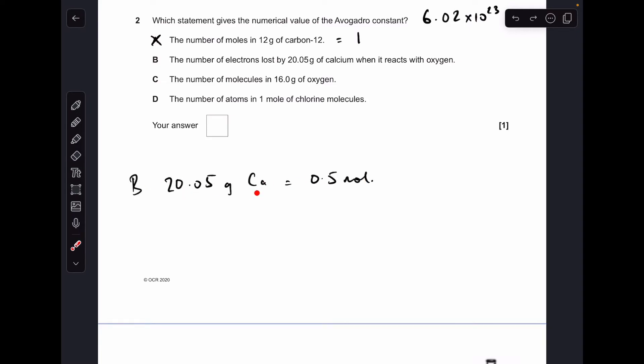Statement B, I'll explain down here. So 20.05 grams of calcium is 0.5 moles. So if you think about any reaction involving calcium, each atom will lose two electrons. So half a mole of atoms is actually going to mean there's one mole of electrons being lost, but it says the number of electrons. So one mole of electrons is 6.02 times 10 to the 23 electrons. So B was correct.